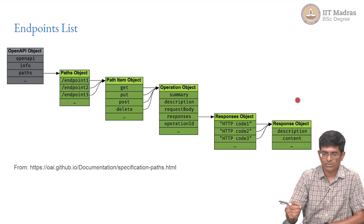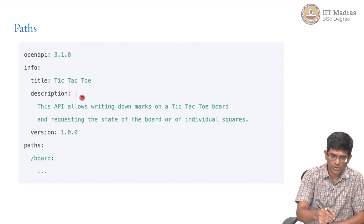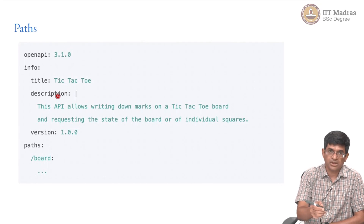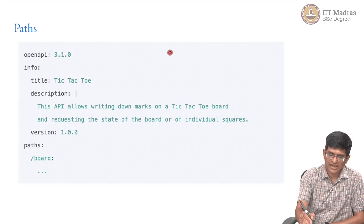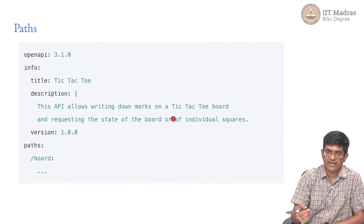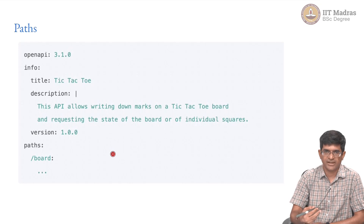What does it look like in YAML format? Some of these examples are from the running example on the OpenAPI web page, which is for a web app that plays tic-tac-toe — noughts and crosses. You would be familiar with that — you have a grid and you put X's and O's such that you get three in a line, and whoever gets it first wins. They are trying to show how to create an API that will allow playing such a game.